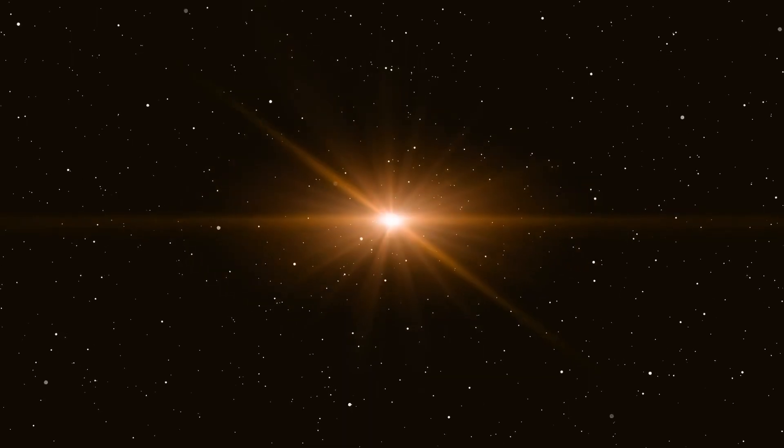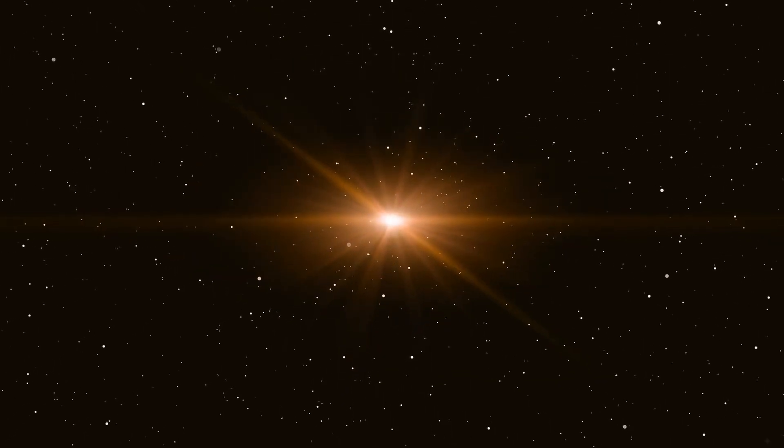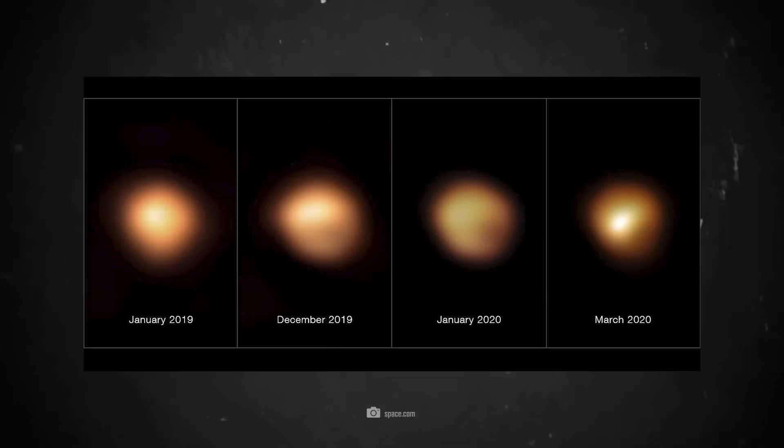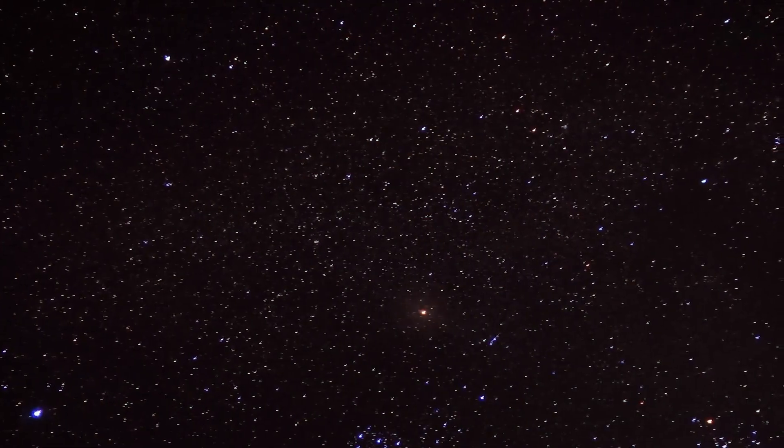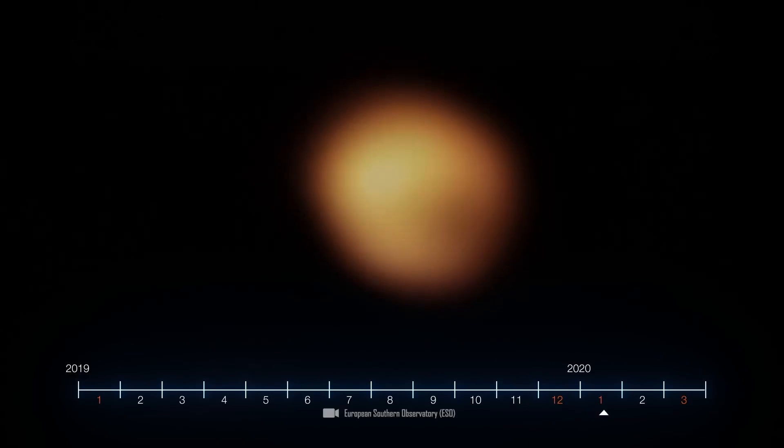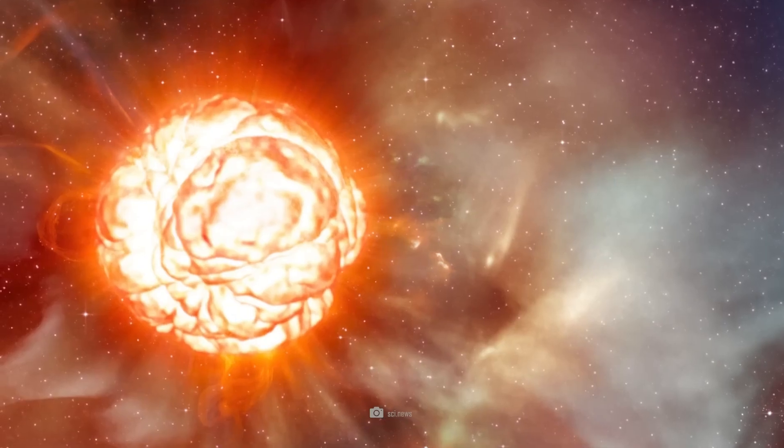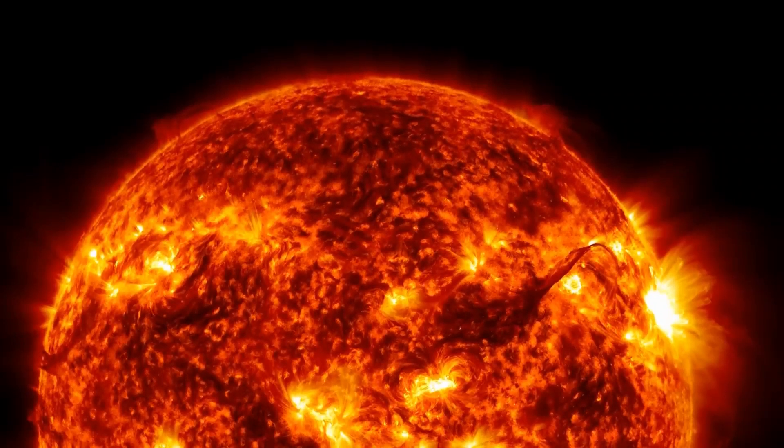The researchers were proved right. The anomalies and Betelgeuse's darkness continued into 2020, and then went down in the history of astronomy as the Great Dimming. In February 2020, Betelgeuse's brightness reached an all-time low.